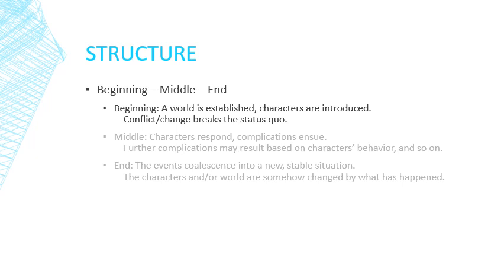In terms of story structure, we can start with a very simple beginning, middle, and end. Every story starts somewhere, has a middle where things happen, and ends with a conclusion. In the beginning, we see the world established and characters introduced. There's always some sort of status quo — people living their lives — and then some conflict or change breaks that status quo. A story is when something interesting, something out of the norm, happens.